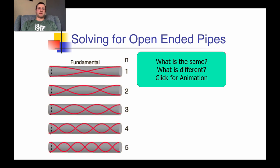As we continue looking at sound through instruments, specifically string instruments and pipe instruments, today we're going to take a look at how sound is produced through open-ended and closed-ended pipes — our pipe instruments — how this looks mathematically, and how it looks in terms of the wave structure that is formed.